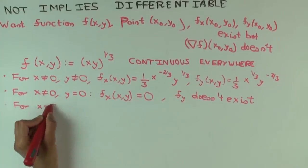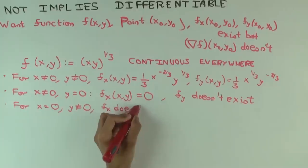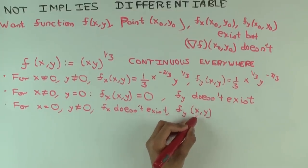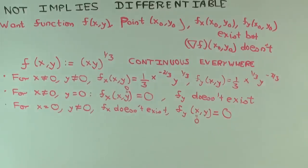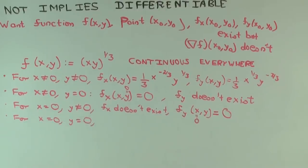What happens when x and y are both zero? What can you say about f_x and f_y? A student suggests they don't exist as individual values. But you cannot just plug in the general expressions directly — you have to go back to first principles.